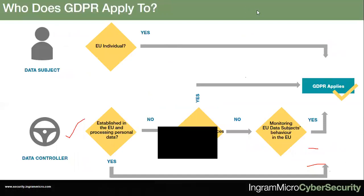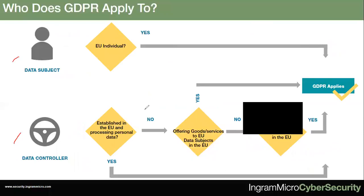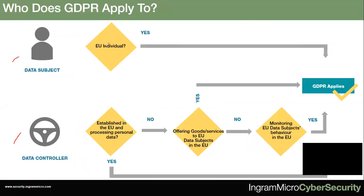Who does GDPR apply to? There are two questions: are you as a person covered under GDPR, and is your organization covered? As a person, you are covered if you are an EU individual — a citizen or a legal resident of the European Union. For organizations, the questions to address are: are you established in the EU, and are you processing personal data? When I say establishment, it does not necessarily mean you have a physical office in the EU — it's sufficient that you have a website targeting a specific EU nation.